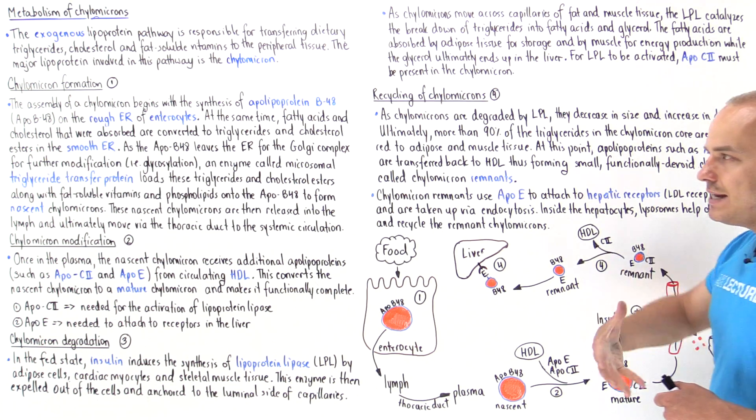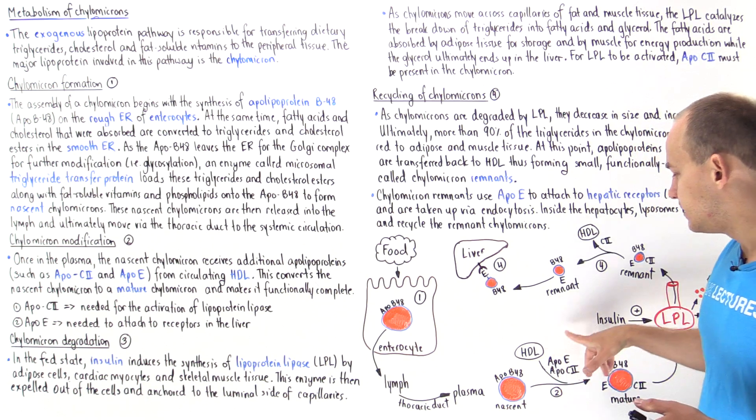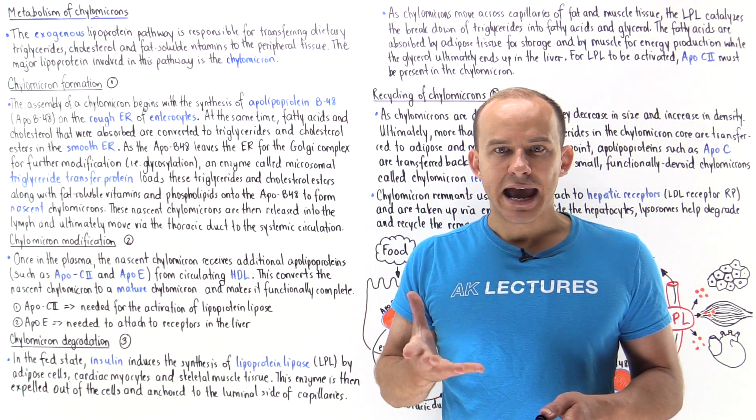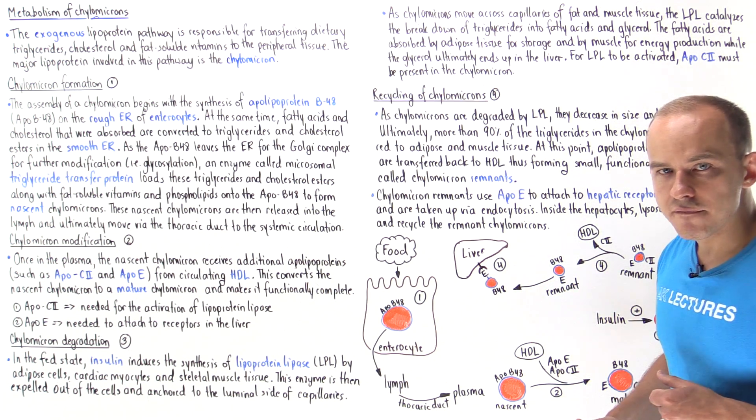If we eat a meal that is rich in fat, our pancreas produces insulin. Insulin acts on these cell types and it stimulates them to upregulate the expression and increase the production of an important enzyme known as lipoprotein lipase, or LPL. Lipoprotein lipase is then released by these cells into the capillary and it attaches onto the endothelium of the capillary.